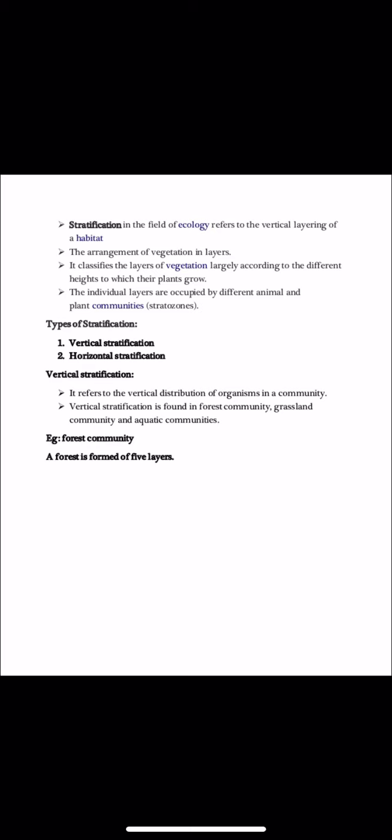Now we will look at the structure of the community. Structure refers to the arrangement of plants in a community. In ecology, this refers to vertical layering of a habitat, known as stratification. Stratification is of two types: vertical stratification and horizontal stratification.